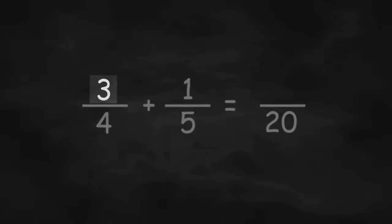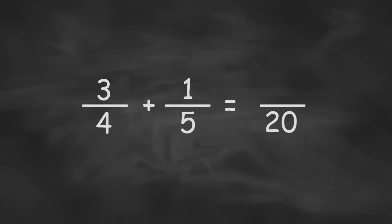Then we're going to start in the top left corner, and this will be important when we try to do subtraction later on. But we start in the top left, and we're going to multiply diagonally across with the other denominator. So 3 times 5 gives us 15. Now we're going to do the same thing with the 1 and the 4. Multiplying across gives us 4.